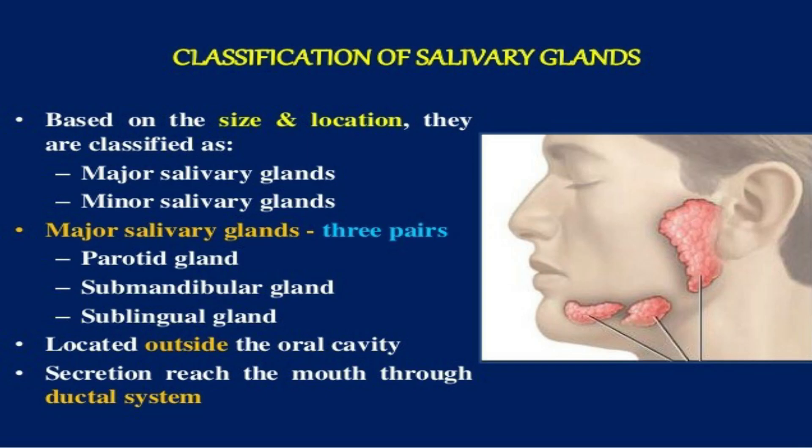Our salivary glands produce saliva — actually 1.5 liters of saliva. Based on size and location, they are classified as major salivary glands and minor salivary glands. Major salivary glands have three pairs: the parotid gland, the submandibular gland, and the sublingual gland.